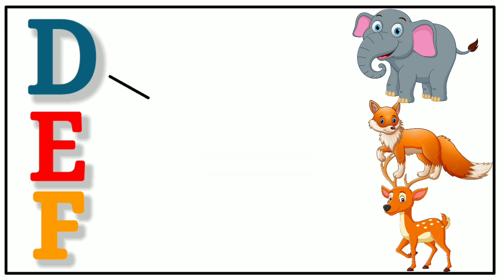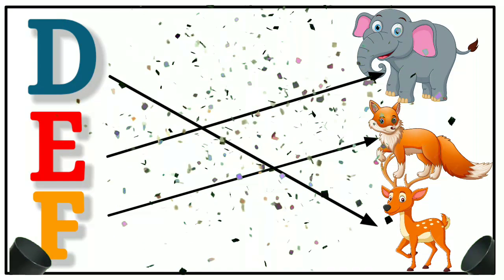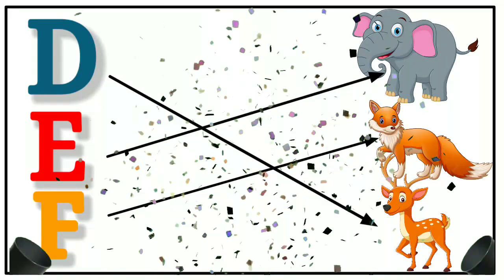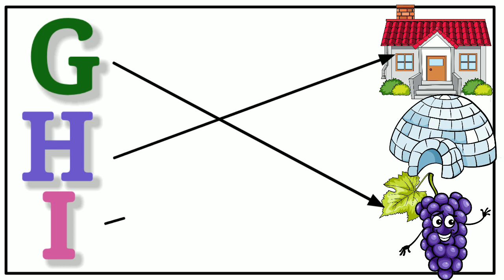D for deer, E for elephant, F for fox, G for grapes, H for house, I for igloo.